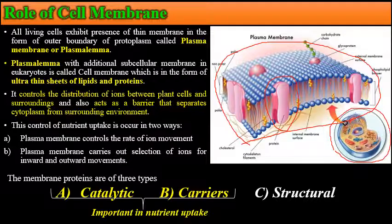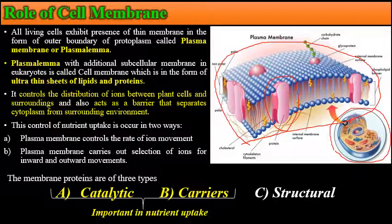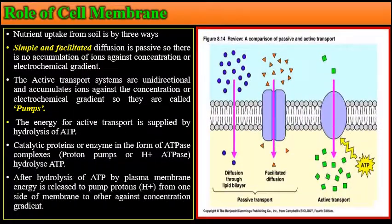The control of nutrient uptake occurs in two different ways. First, the plasma membrane controls the rate of ion movement. Second, the plasma membrane carries out selection of ions for inward and outward movement. Membrane proteins are of three basic types: catalytic proteins, carrier proteins, and structural proteins. The first two — catalytic and carrier proteins — play a very important role in nutrient uptake.